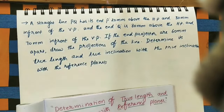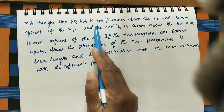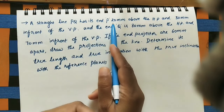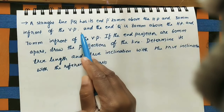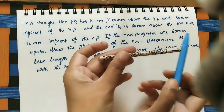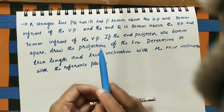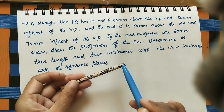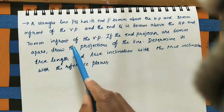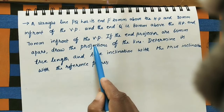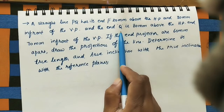The given data is: a straight line PQ has its end P 20 mm above the HP and 30 mm in front of VP. That is the position of end P. End Q is 80 mm above the HP and 70 mm in front of VP — that is the position of end Q.